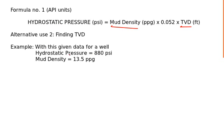From this example I will tell you how to use this formula. You are given hydrostatic pressure 880 psi and you are using a mud density 13.5 ppg. You have to find TVD, true vertical depth.